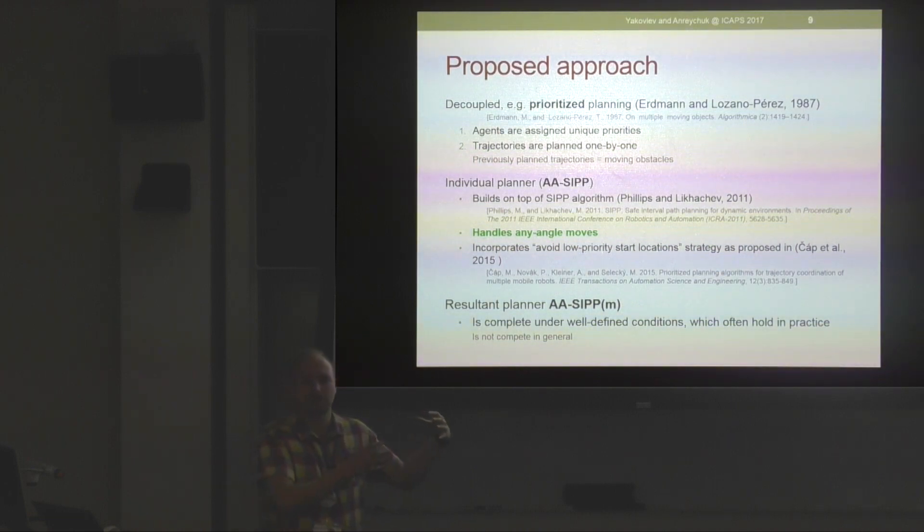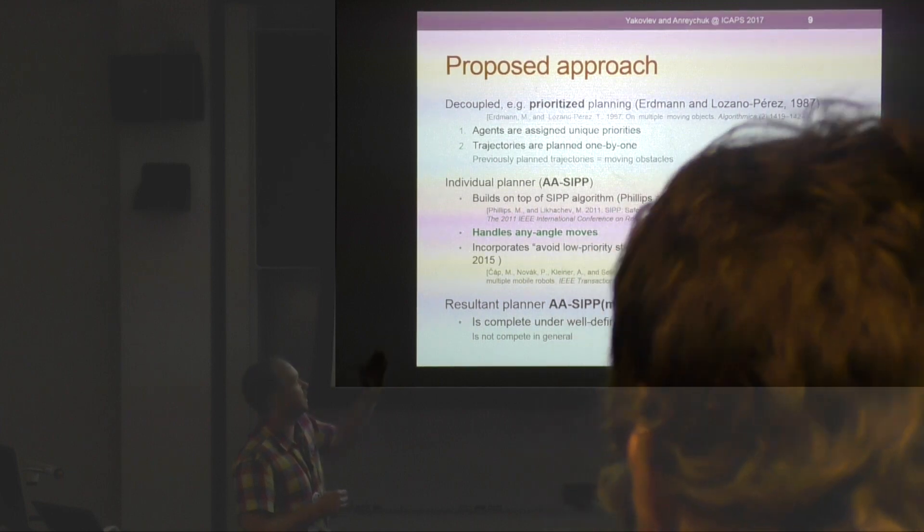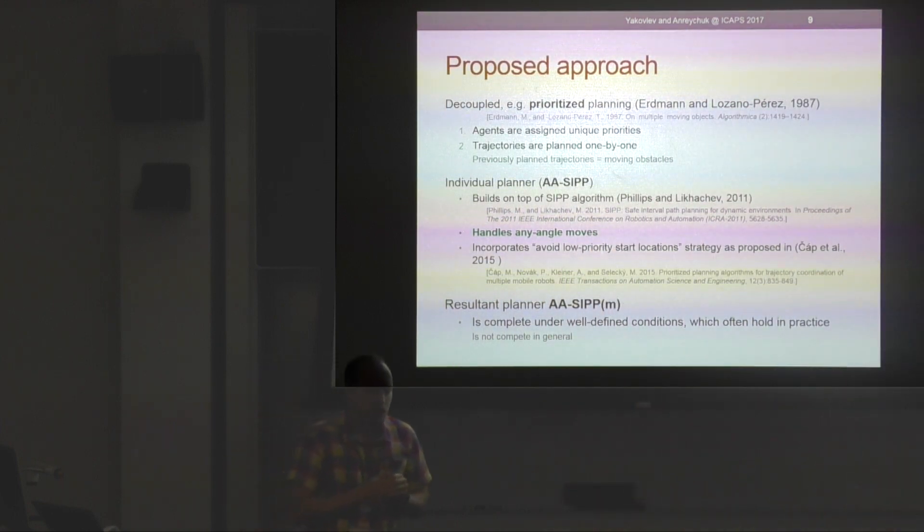We build our individual planner on top of Safe Interval Path Planning algorithm, which was proposed here in Carnegie Mellon University by the group of Maxim Likhachev. We enhance it so now it's capable of handling any-angle moves, and we also incorporate this avoid low-priority start location strategy as proposed in the work by Chipp and others, which was also presented at ICAPS a few years ago. We need this to guarantee the completeness of the multi-agent planner under certain conditions.